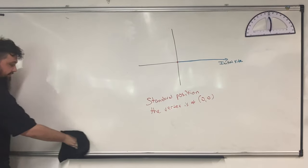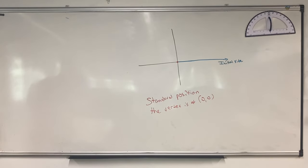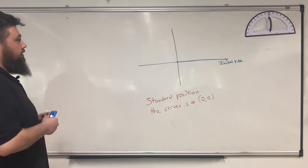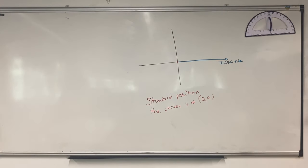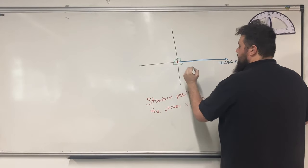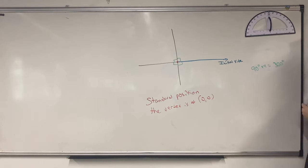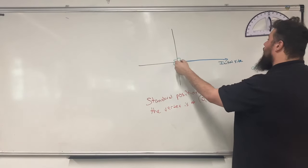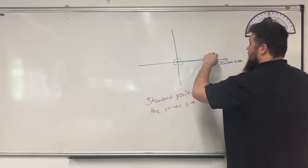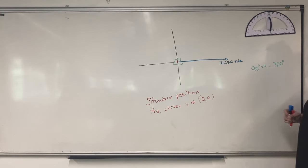Each quadrant encompasses 90 degrees, so 90 times four quadrants gives us 360 degrees total. If you pick any point on the initial side and travel either direction in a positive or negative rotation, you'd have to walk 360 degrees to get back where you started. Let's look at some examples. Say I want to graph point P rotated a positive 45 degrees about the origin.